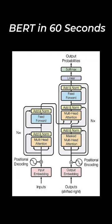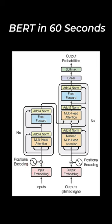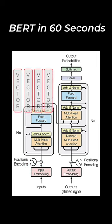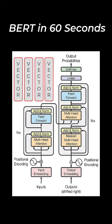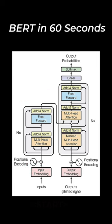BERT explained in 60 seconds. Transformer neural networks can translate one sequence to another. Sequences can be words — for example, it can translate English to French.